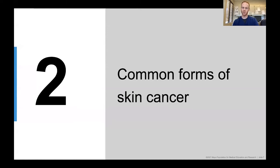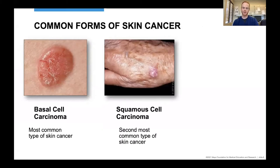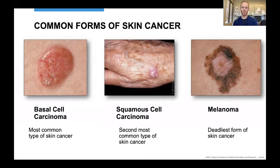Now, section two — the most common forms of skin cancer. Basal cell carcinoma is by far the most common type of skin cancer. Squamous cell carcinoma is the second most common. And melanoma is the one most of us have heard the most about, historically thought of as the deadliest form of skin cancer, though we'll chat a little bit later about whether that's true or not. These are the three most common types we'll discuss today.